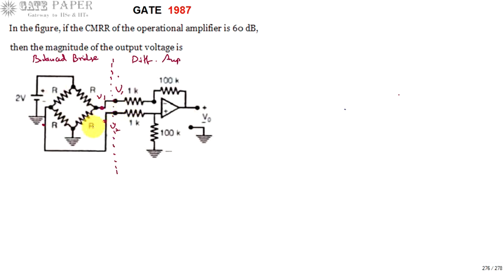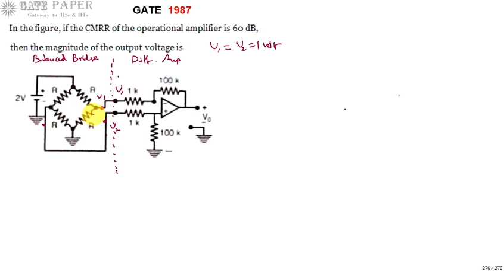V1 equals 2 volts dropping from a point to ground. Since both paths have equal resistances, exactly half the voltage drops across a single R, so 2 divided by 2 is 1 volt. Therefore V1 = V2 = 1 volt. These are the inputs for the differential amplifier obtained from the balanced bridge.